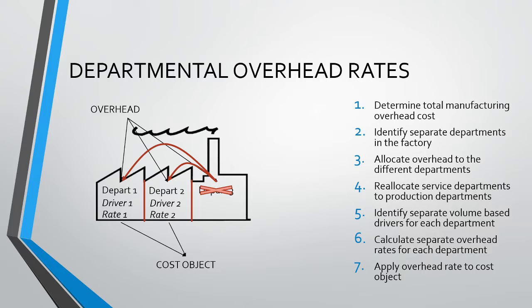A quick recap of how departmental overhead rates work. In our previous video on allocating the overhead cost to the departments, we focused on steps 1 to 3, which took us through determining the total manufacturing overhead cost, identifying the separate departments, and ended with us allocating our overheads to the departments in the factory. In this video, we will again be focusing on steps 4 to 7, which look at the reallocation of service departments, the calculation of the departmental overhead rates, and allocation to the products.